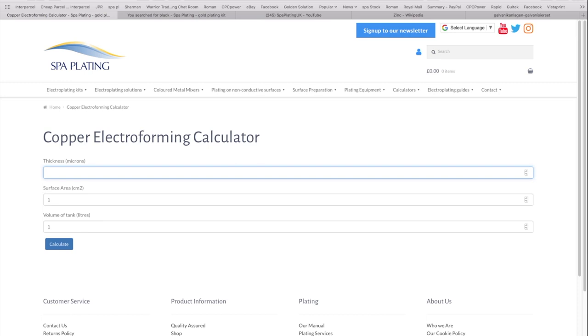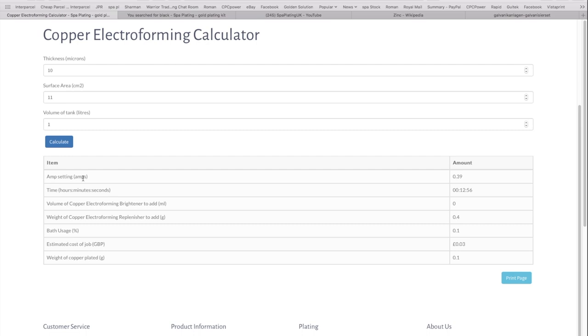Then you put in the thickness you want to plate. All in microns, say 10 microns. Surface area, in this case we worked out just under 11 for this item. Click calculate, and then you can see all the details. Amp settings 0.39 in this case.